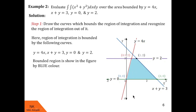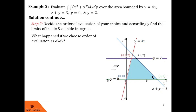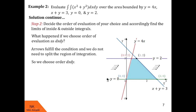In step 2, we decide the order of evaluation. We choose it so that we do not need to split the region. We first check what happens when we throw arrows parallel to the x-axis from left to right. These arrows enter the region by crossing one curve and exit by crossing one curve. So in this order we do not need to split the region of integration, and we stick to this order.